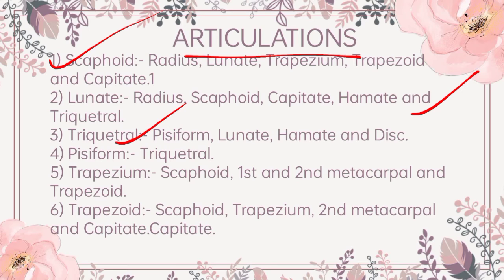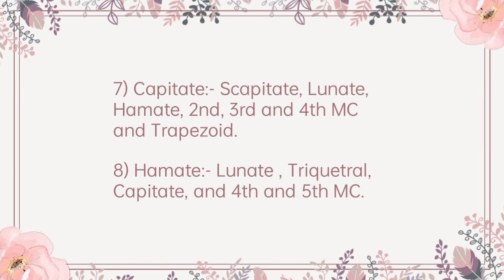Triquetral articulates with pisiform, lunate, hamate and the articular disc of the inferior radioulnar joint. Pisiform just articulates with triquetral. Trapezium articulates with scaphoid, first and second metacarpal and trapezoid. Trapezoid articulates with scaphoid, trapezium, second metacarpal and capitate. The capitate bone articulates with scaphoid, lunate, hamate, second, third and fourth metacarpal and trapezoid. Hamate articulates with lunate, triquetral, capitate and fourth and fifth metacarpal.